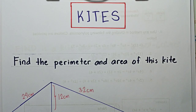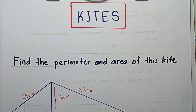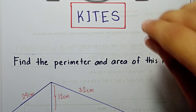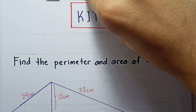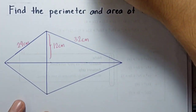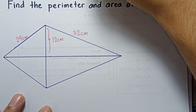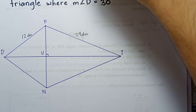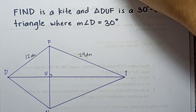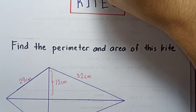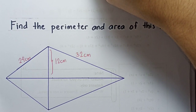In this video we're going to talk about kites, specifically finding the perimeter and area of two given kites. Let's start with the first example.